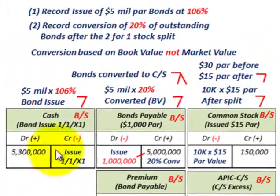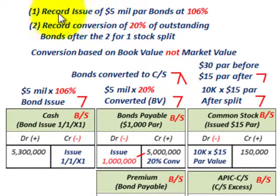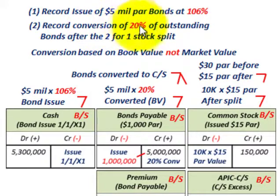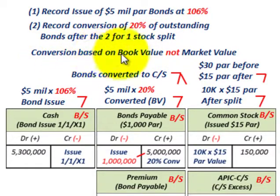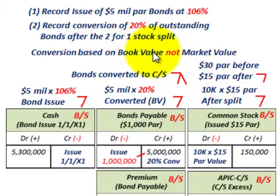Now let's look at how we would record this conversion. We're not going to involve any interest charges — we're strictly looking at issuing the bonds and recording the 20% conversion after the two-for-one stock split. When we make this conversion, everything is going to be based on the book value, not the market value. I gave you the market value for the problem, but conversions are done at book value.